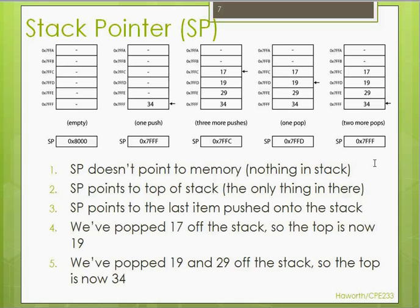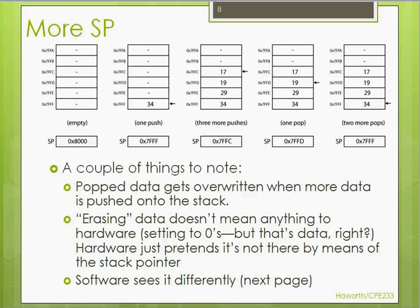If one more pop were to occur, that 34 would be retrieved or popped from the stack and the stack pointer would go back to hex 8000. It's important to note that when we pop things from the stack, they're not necessarily actually removed. We just increment the stack pointer. The item that was popped, although it is read from the stack, is still left there and would be rewritten if something else was pushed onto the stack.